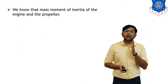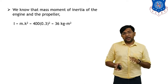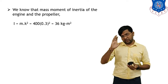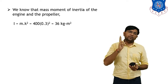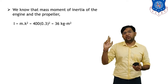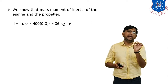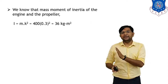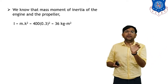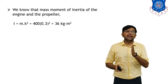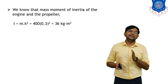Now we solve the numerical. The mass moment of inertia of the engine and propeller is given by I = mk². Substituting m = 400 kg and k = 0.3 m, the value of mass moment of inertia I = 400 × (0.3)² = 36 kg·m².